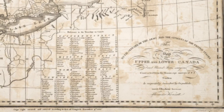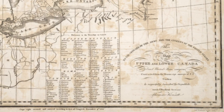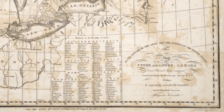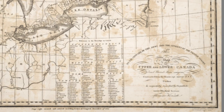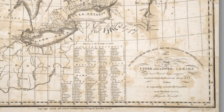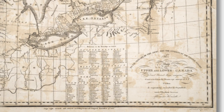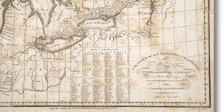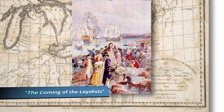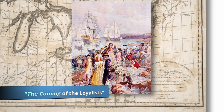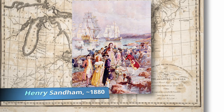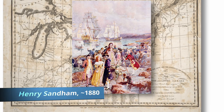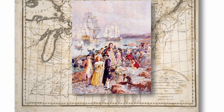By now, it was apparent to even the most starry-eyed Americans that the residents of Canada had no desire to throw off the British monarch. This is not surprising since many were formerly from the United States and had moved to Canada following the Revolution to escape what they saw as an illegitimate government.